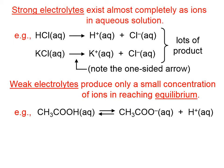Weak electrolytes produce only a small concentration of ions in reaching equilibrium. For example, this is acetic acid, and a very small fraction of acetic acid molecules actually end up generating ions — that is, the acetate ion and hydrogen ion. But most of the acetic acid molecules stay intact and simply float around in the aqueous solution.